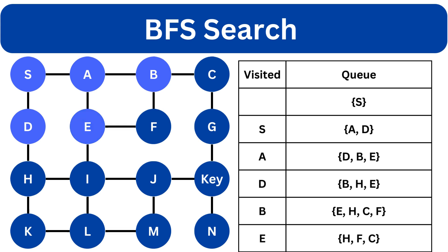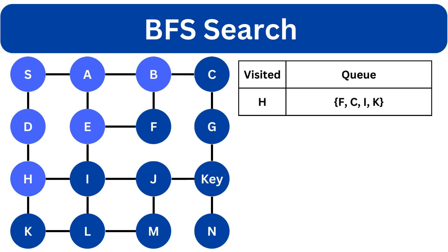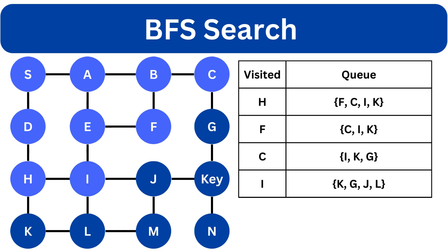We dequeue E node and the neighbor is F which is already in the queue, so we will not append it again. The next up is H node. We will append the neighbors I and K at the end of the list. Then we explore the F node. The next is C node and we will add its neighbor G at the end of the queue. We dequeue I and add its neighbors J and L at the end of the queue. We explore the K node and append its neighbor L to the list.